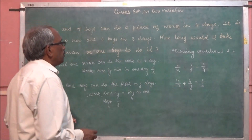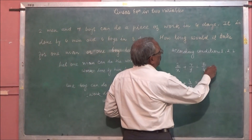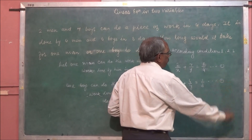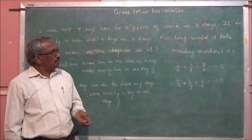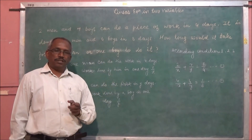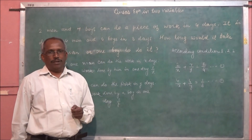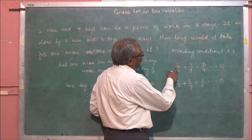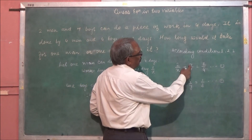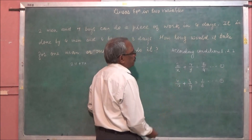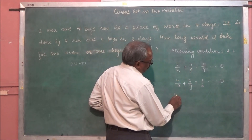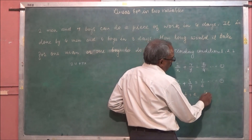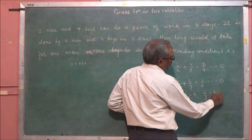Call these equation 1 and equation 2. Solving these equations is straightforward, but first writing the correct equations is most important. Notice that in both equations we have 1/x and 1/y. So we use substitution: put 1/x = a and 1/y = b.